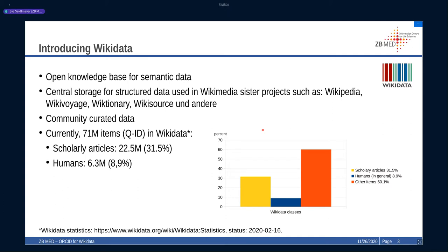I guess most of you will know Wikidata, but I will shortly introduce it anyway. Wikidata is a semantic database that anybody can edit and use. Wikidata functions as a central storage for many Wikimedia projects, but it is also used in external services, for example in the Google knowledge graph.